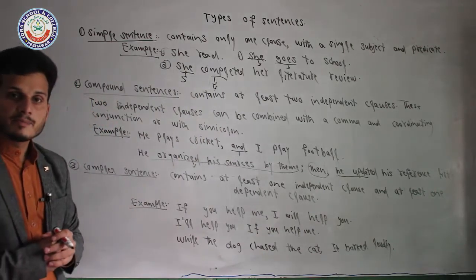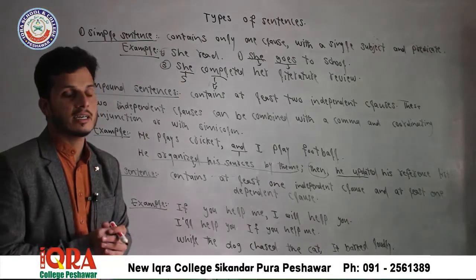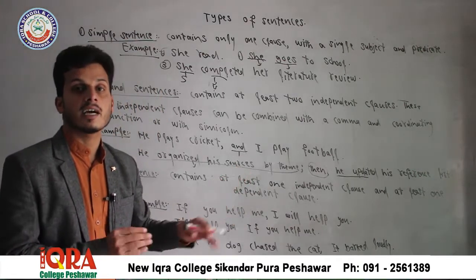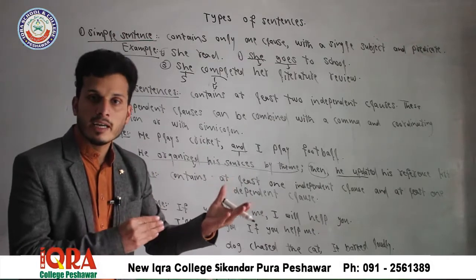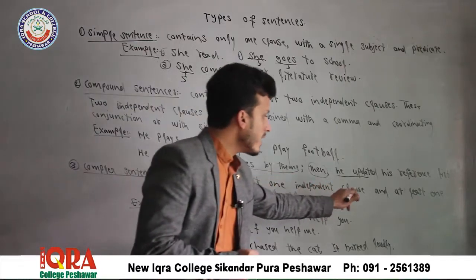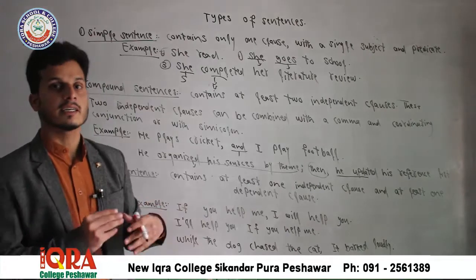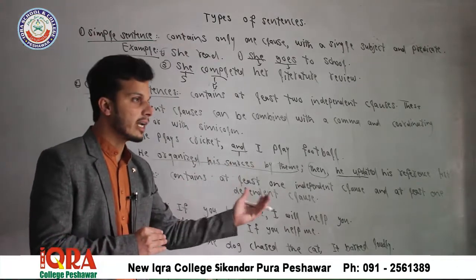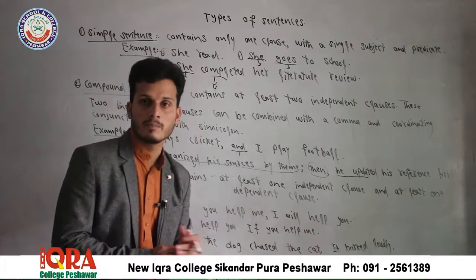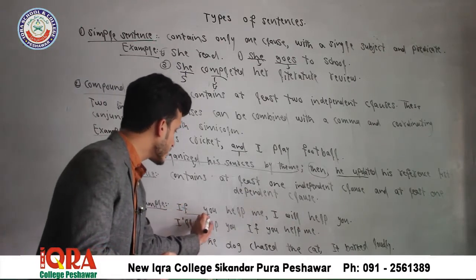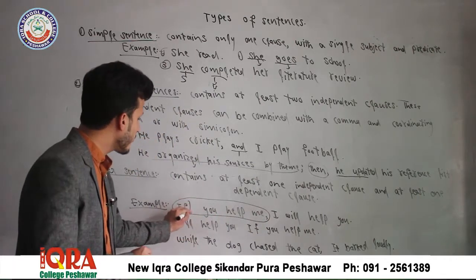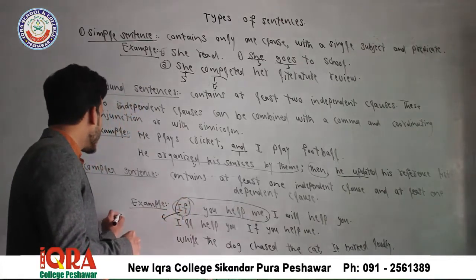Ab complex sentence kya hai? Complex sentence mein ek criteria hota hai ke at least — at least ka matlab yeh hai ke aap is se zyada bhi likh sakte hain — to at least ek independent clause hoga aur at least one dependent clause hoga. Ek independent clause hoga aur ek dependent clause hoga. Ab example dekhein: 'If you help me, I will help you.' Is clause ko dekhein — yeh dependent clause hai.